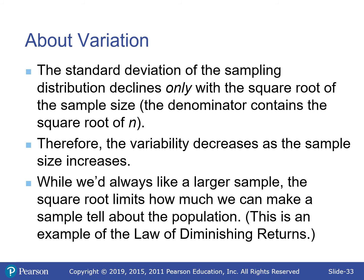To cut the standard deviation in half, the sample size needs to increase by a factor of 4. To take it to a third, multiply sample size by 9. As sample size increases, variability does decrease — but getting it very small becomes not feasible. If you have a budget for a sample of 20 but want the standard deviation to be one-third that size, you'd need 180, which is a very large difference.